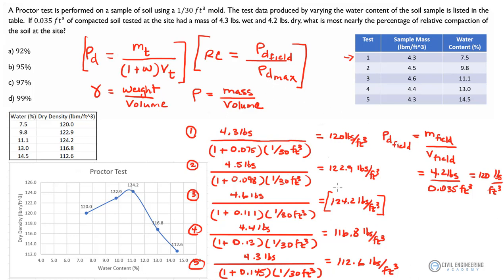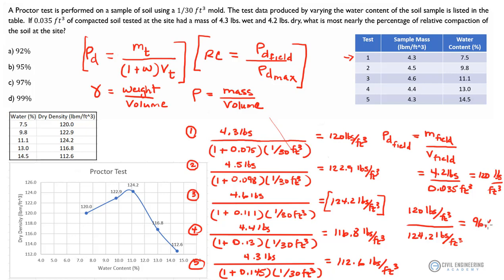We know our max density was calculated at 124.2 pounds per cubic foot. So our relative compaction is just taking rho sub d field — 120 pounds per cubic foot — and dividing it by our maximum from the proctor test, which was 124.2 pounds per cubic foot. Run that through your calculator and you should come up with something like 96.6%, which corresponds to answer C.